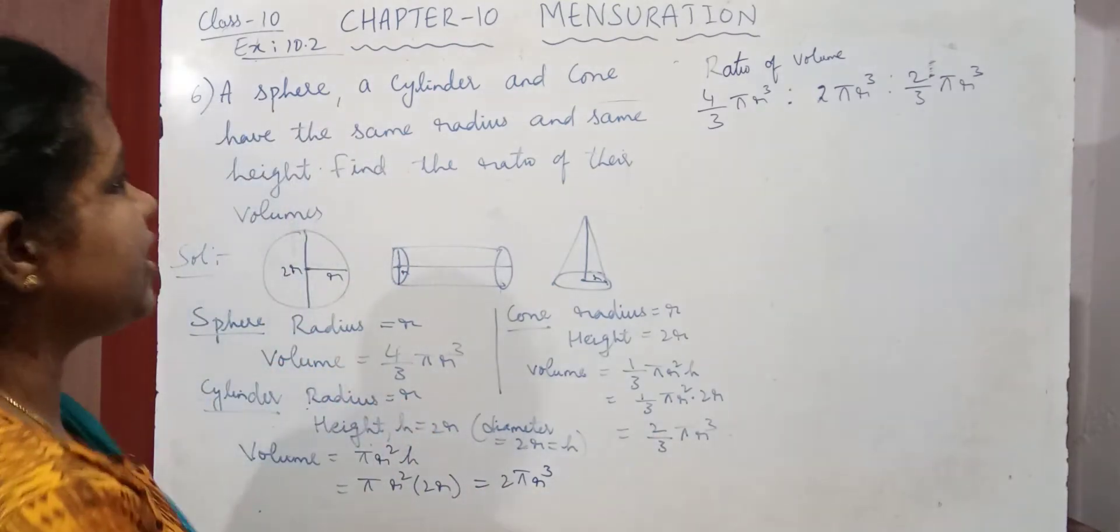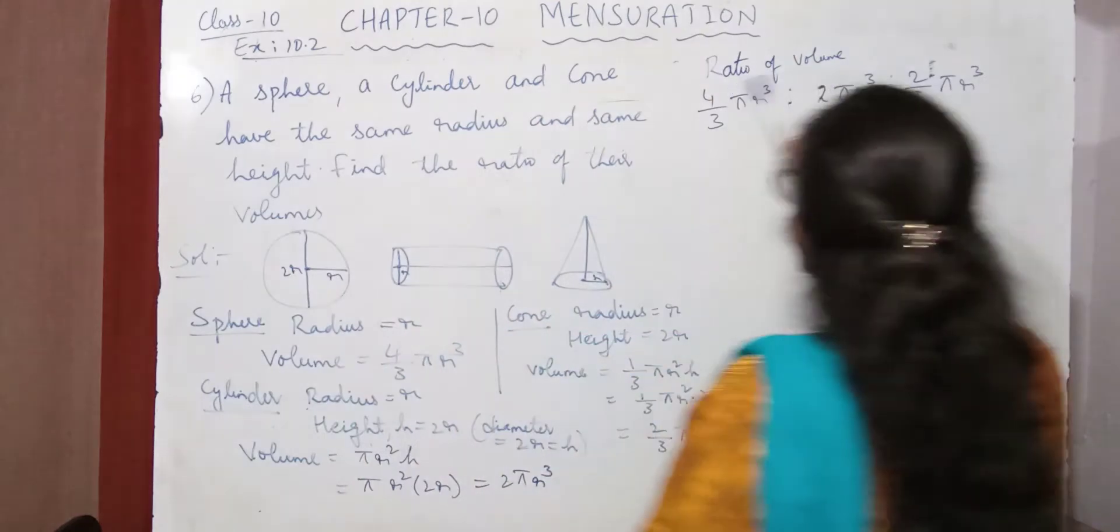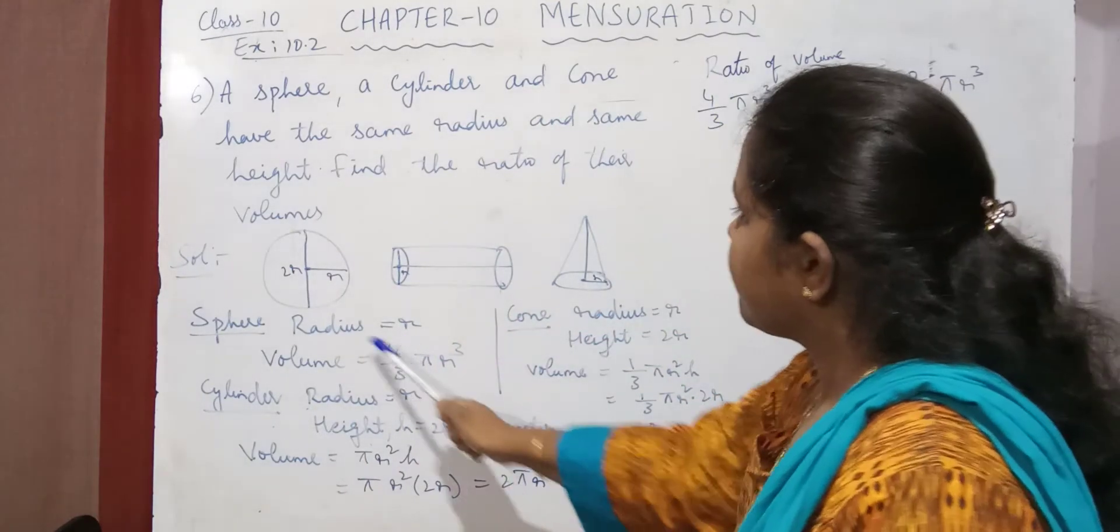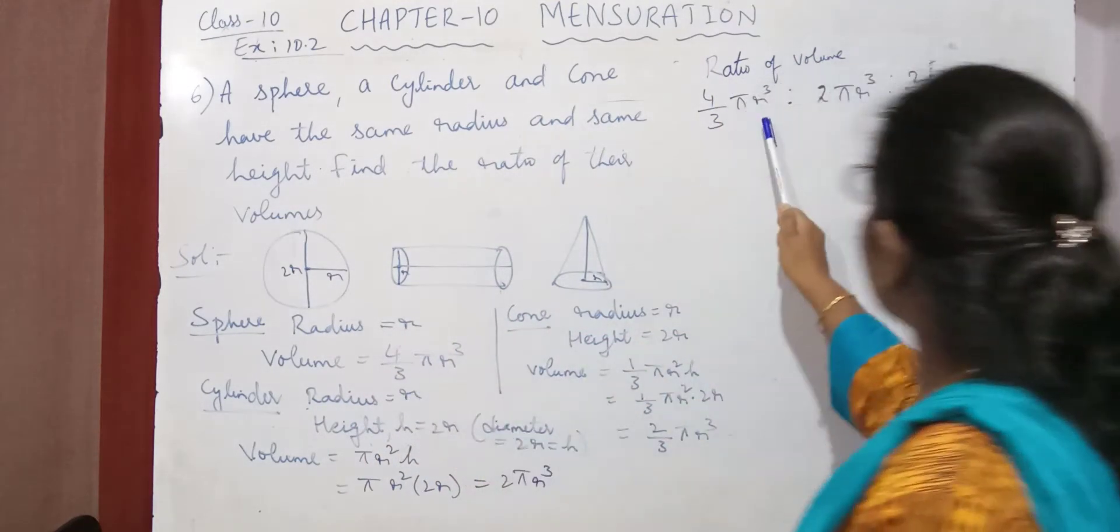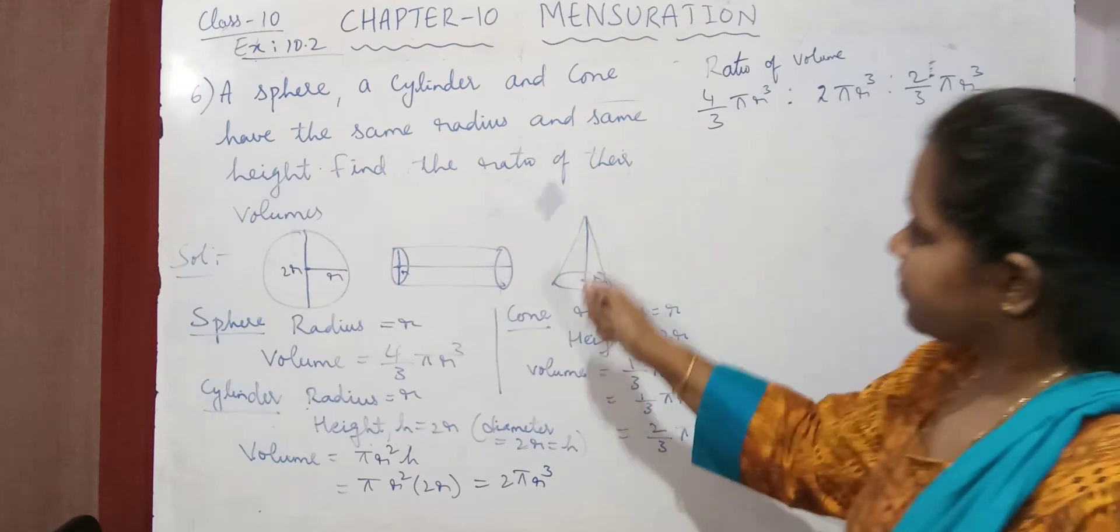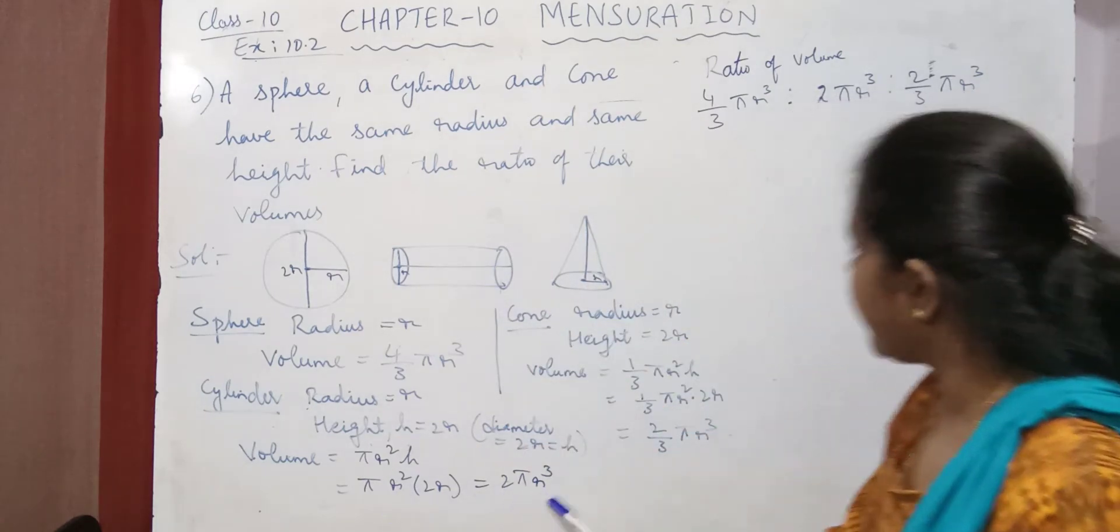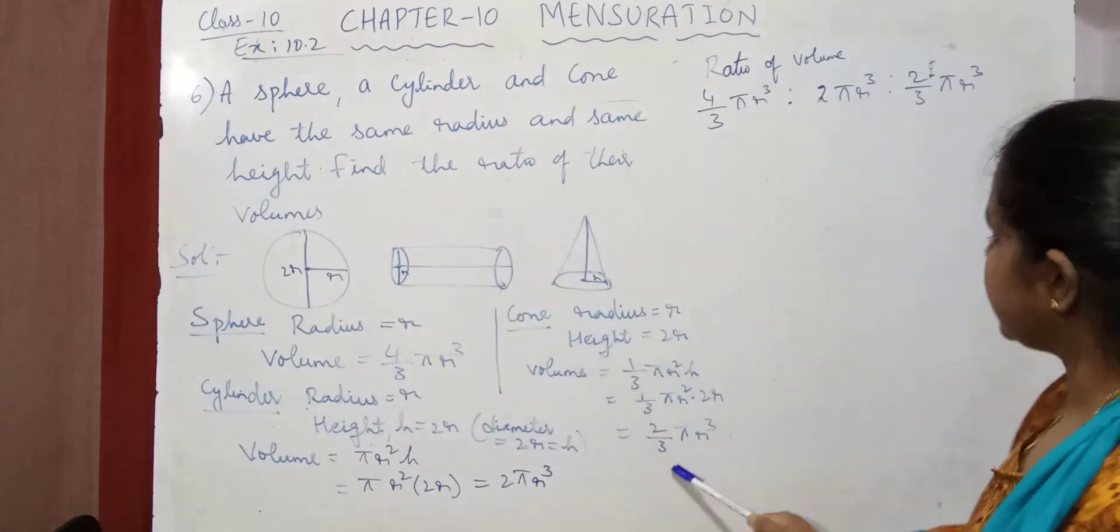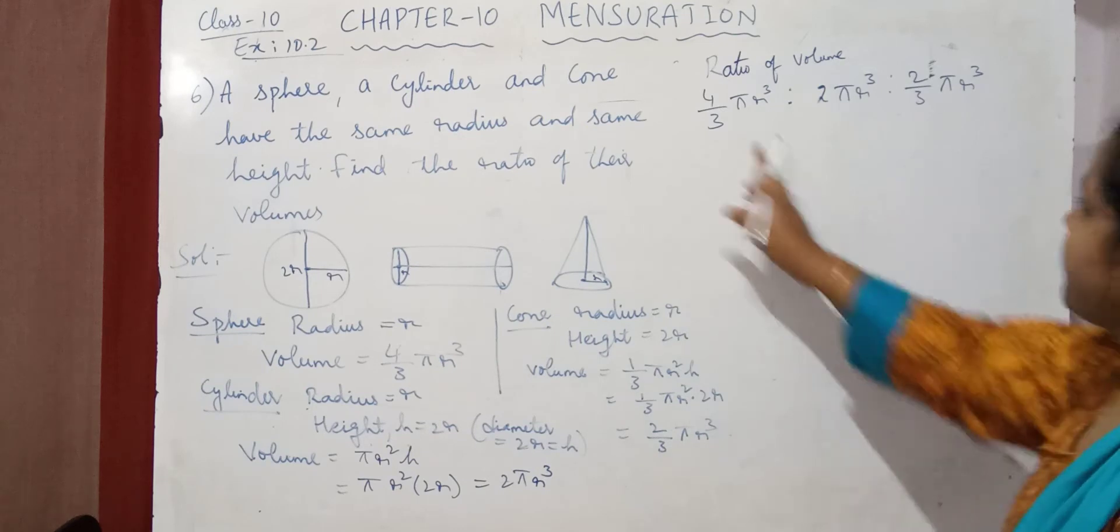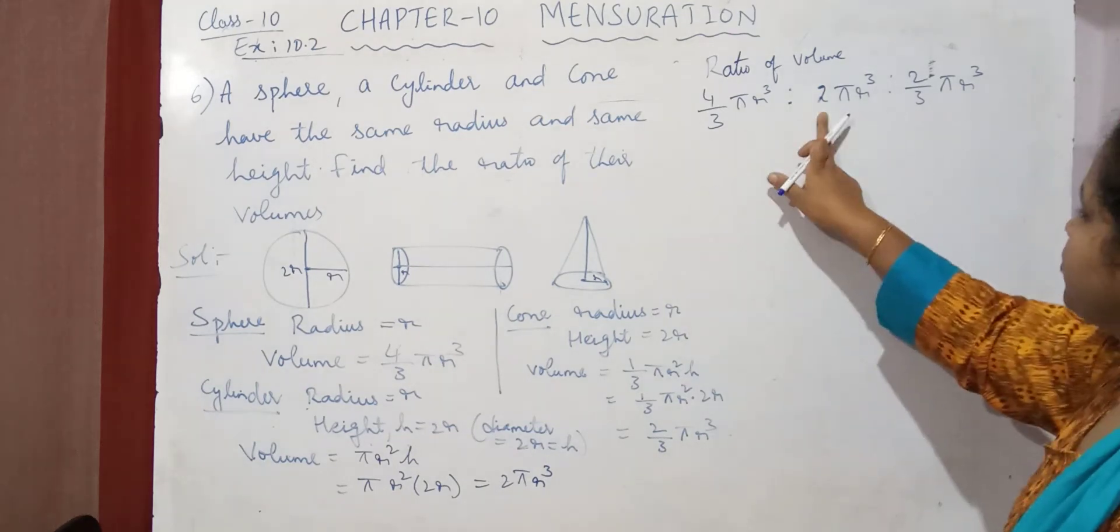Now we have to find the ratio of the volumes. So the ratio of the volumes is here. For the sphere, it is 4 by 3 pi r cube. And for the cylinder, it is 2 pi r cube. And for the cone, it is 2 by 3 pi r cube. If you observe, you have denominator 3. Denominator 3.